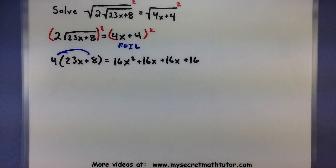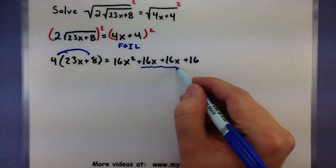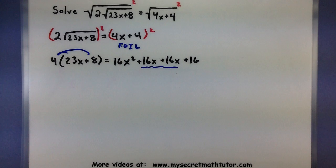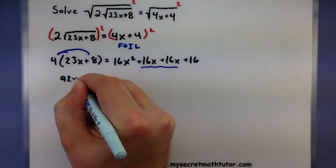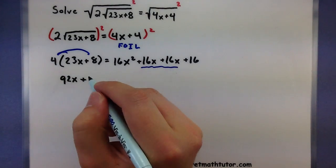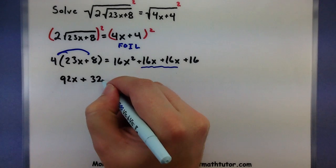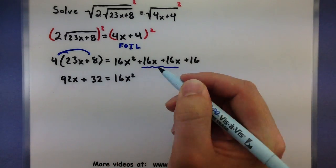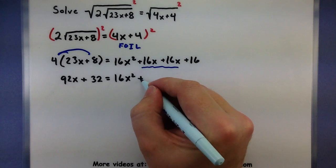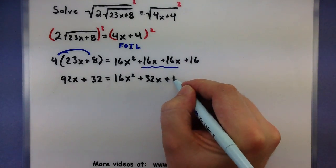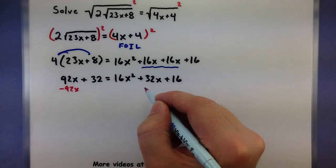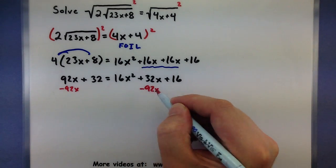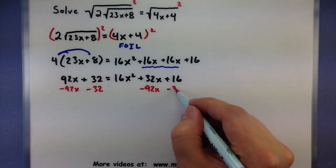Let's distribute this 4 in here. And let's go ahead and combine a few of these guys here. So 4 times 23, that'll give me a 92x, plus 4 times 8, 32. 16x squared, plus 16, plus 16, so plus 32x, plus 16. Looking nice. Let's get everything over on the right side. We'll subtract our 92x and let's go ahead and subtract this 32.